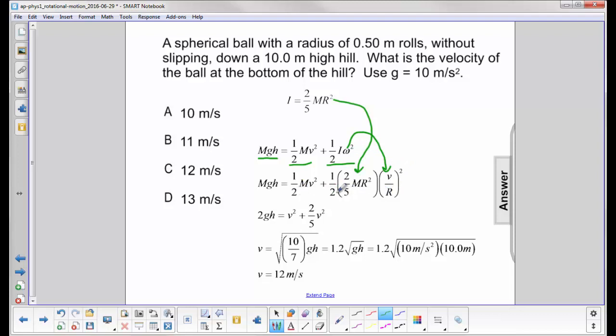I see here I have 2's. I'm going to multiply them through. So I have 2gh. All the masses cancel out. And I will have V squared plus 2 fifths V squared.